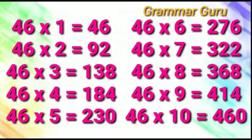46 ones are 46. 46 twos are 92. 46 threes are 138. 46 fours are 184. 46 fives are 230.